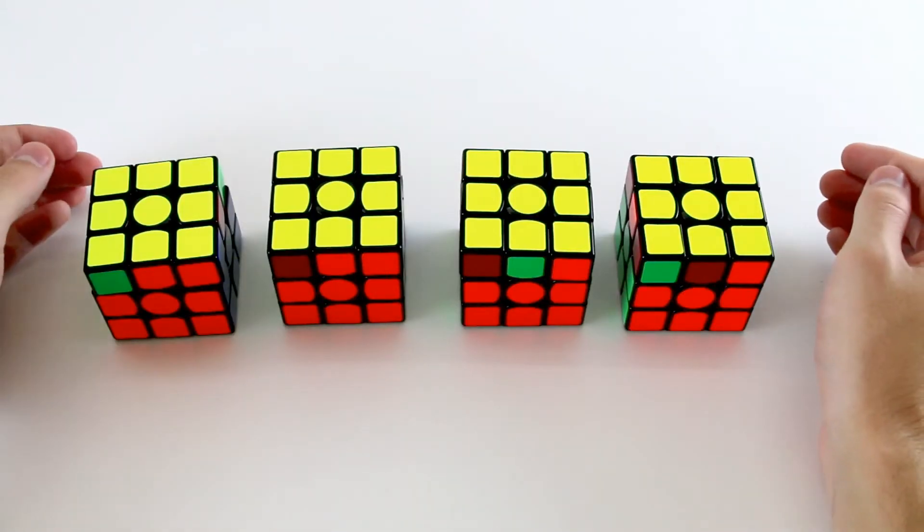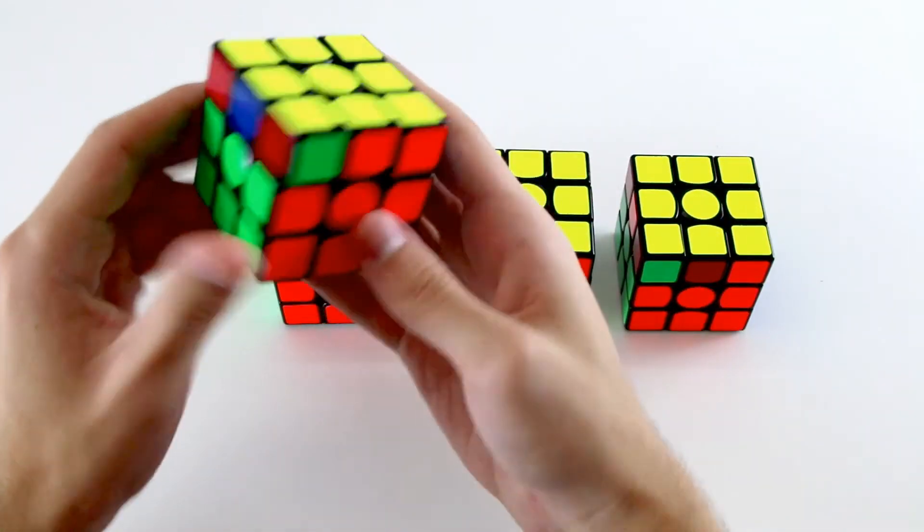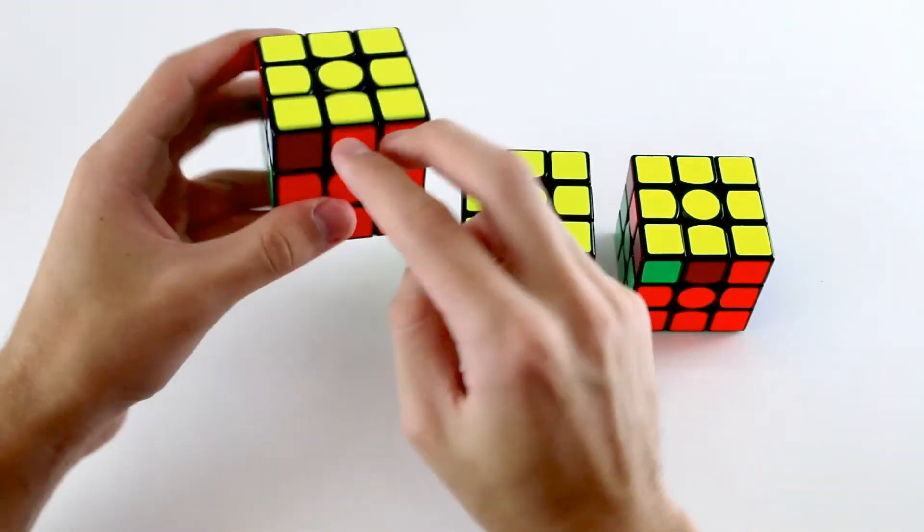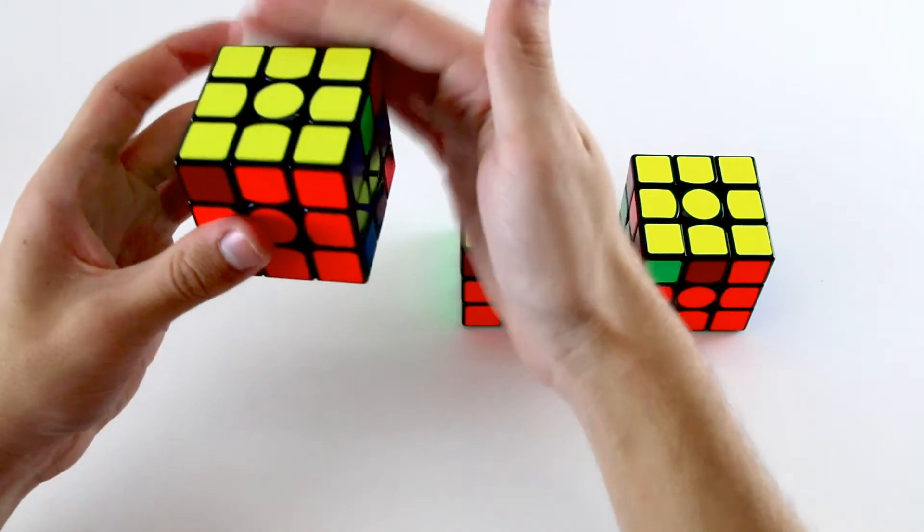So the four G permutation cases are as follows. So this first case here, you'll have the block at the front, and the matching corners adjacent to it on the left. The next case, you'll have the block on the front again, but the matching corners are opposite it on the back, like that.